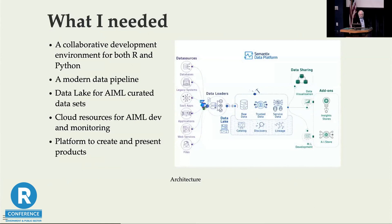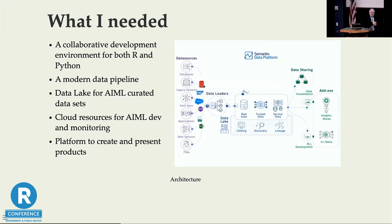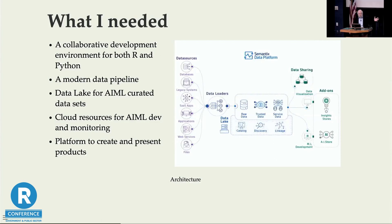What we need is a collaborative development environment that supports both R and Python, because I have computer scientists turned data scientists who learned Python, and IO psychologists and life scientists who use R — they've got to be able to work together. One thing I really like about Quarto is that you can use both R and Python and share documents by freezing the code, so when you send your R code to someone working in Python, it doesn't try to run their code if they don't have R. We also need a modern data pipeline, a data lake for AI/ML curated data sets, more cloud resources, and a platform.